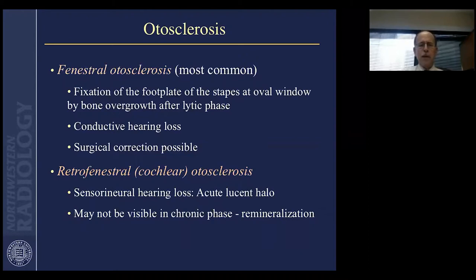Often there's a positive family history and symptoms tend to present in the second and third decades, typically with slowly progressive conductive hearing loss, which is bilateral in most patients. You can see, ultimately, later in the course of disease, fixation or bony solidification of the stapes at the oval window. But early on, there's a lytic phase with bony demineralization. Conductive hearing loss may be found in either the early or late phases.